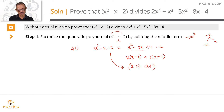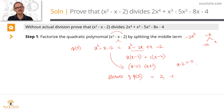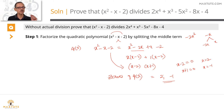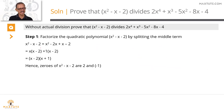So x squared minus x minus 2 factorizes as x minus 2 times x plus 1 — that's our q of x. The zeros of q of x are found by setting each factor to zero: x minus 2 equals 0 gives x equals 2, and x plus 1 equals 0 gives x equals minus 1. So the zeros of the quadratic expression are 2 and minus 1. Step 1 complete: we factorized q of x and found its zeros.